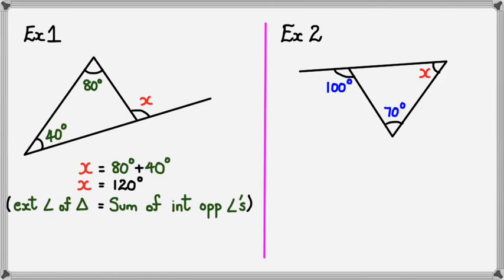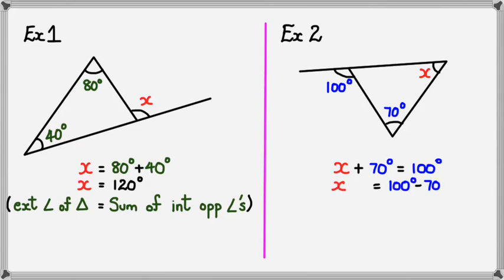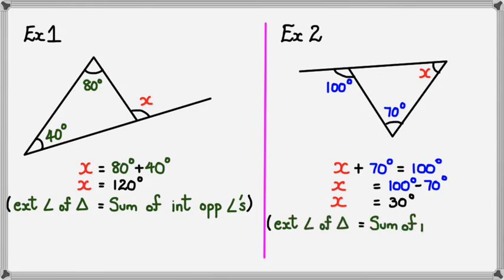In this example we need to figure out X again, except this time X is one of the interior opposite angles. Nothing really changes — we know the two interior angles add up to the exterior angle. So X plus 70 equals 100 degrees, meaning X equals 100 minus 70, so X equals 30 degrees. Don't forget the geometric reasoning.